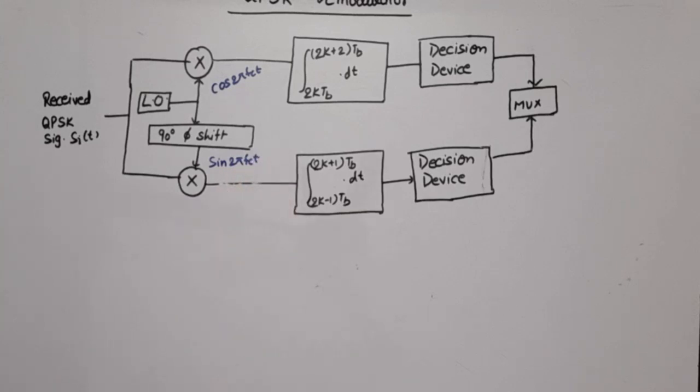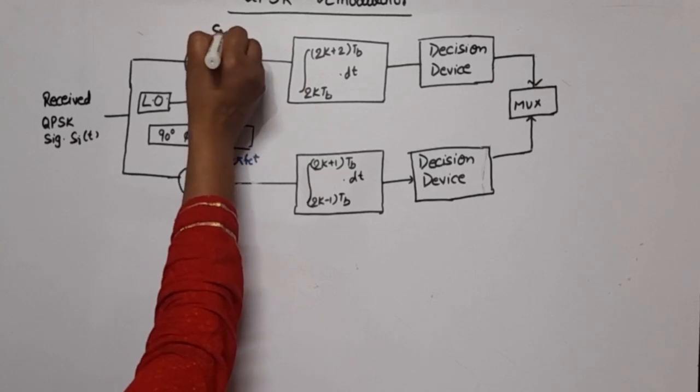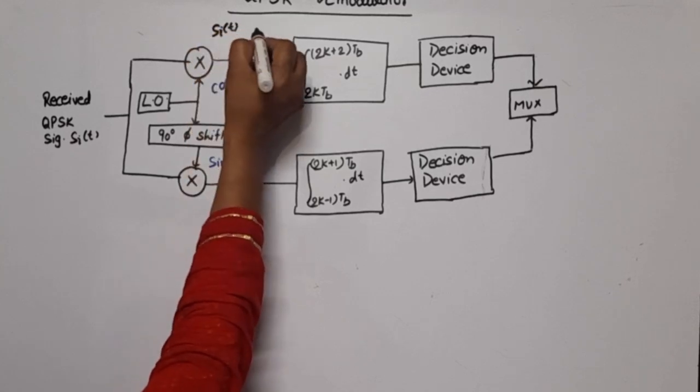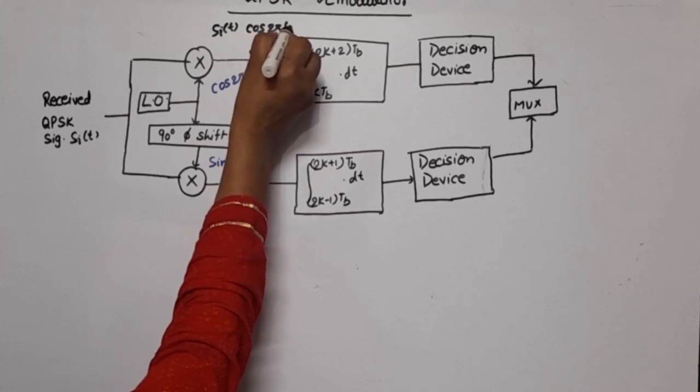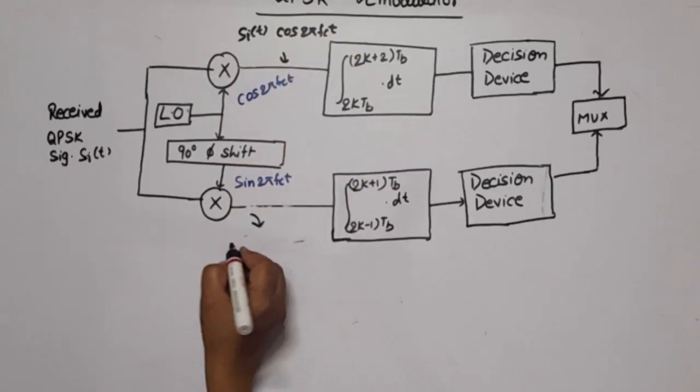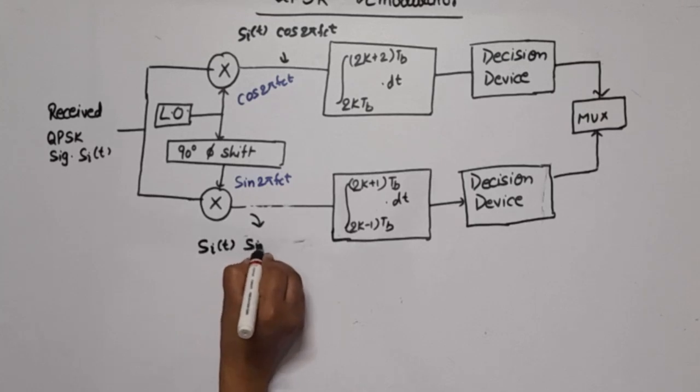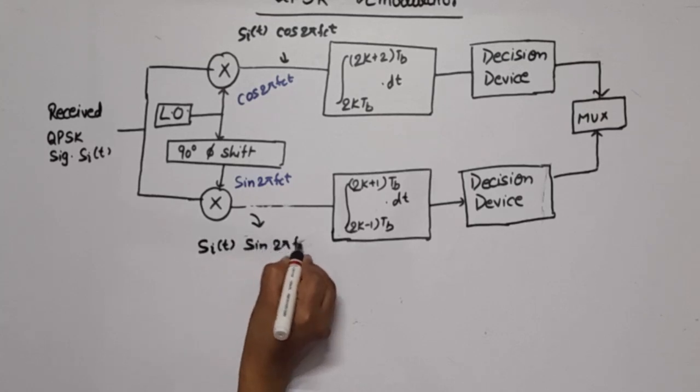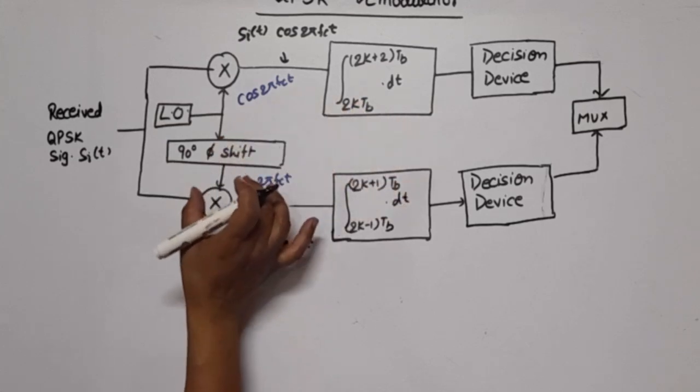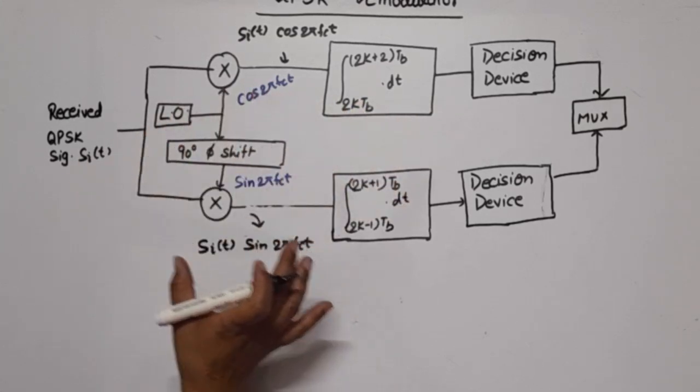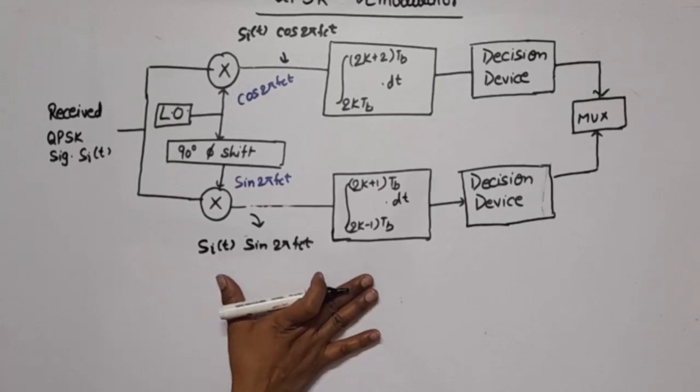The output of the first product modulator is si(t) cos(2π fc t), and the output of the second product modulator is si(t) sin(2π fc t). This is the in-phase channel because the carrier is directly applied. We have 90 degree phase shift for the second, so this is the quadrature channel.